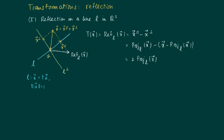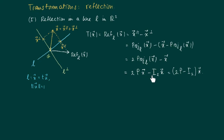If we look at this formula, we get one times the projection and here minus one times the projection, so we get two times the projection of x on L minus the vector x. We know that the projection on a line has a projection matrix. Suppose this is given by P, then we get the formula 2Px minus the identity times x, which is just x — giving us (2P minus the identity matrix) times x.